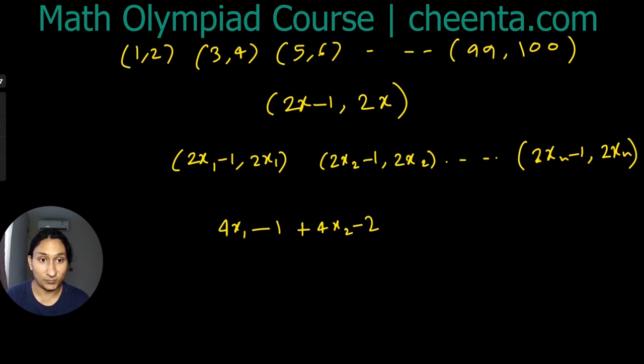Which is actually 4 times the sum of the xᵢ's minus n.